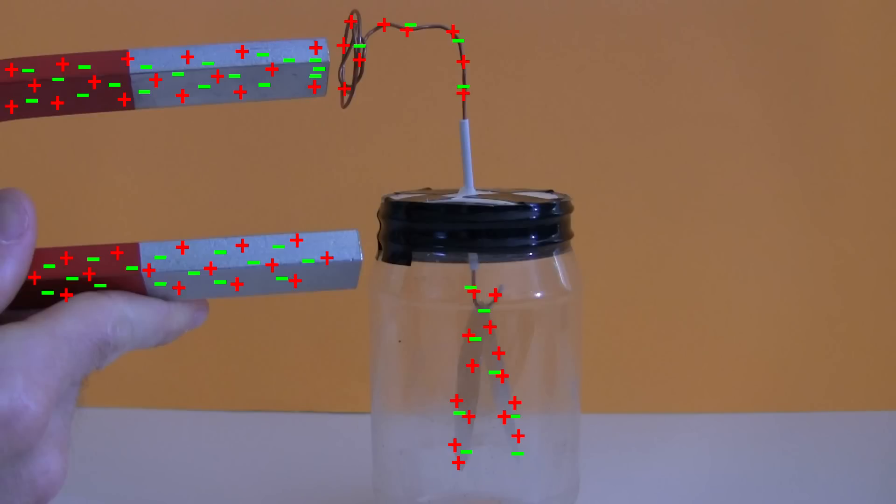Since like charges repel each other, that causes some of the electrons on the terminal to be repelled towards the leafs. Those electrons repel other electrons along the way, and the end result is that electrons move further down to the leafs. Those electrons on the leafs cause the leafs to be less positively charged. And since both leafs are less positively charged, they don't repel each other as much. They come together a little.